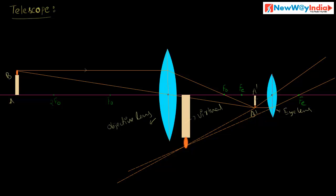The image is not inverted because it is formed on the same side of the object and in the same direction. So this is called a virtual image, and it is a highly magnified image. In this way, we can get a clear image of distant objects by using a telescope.